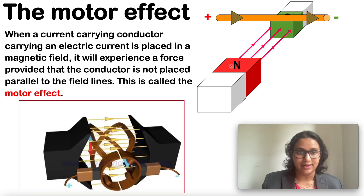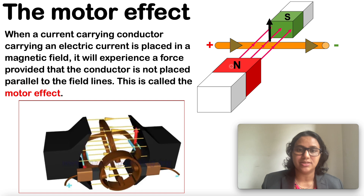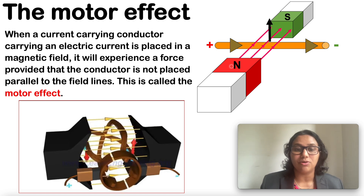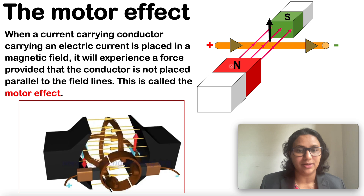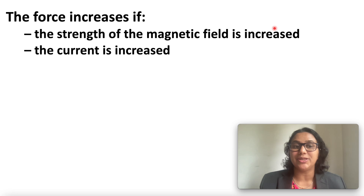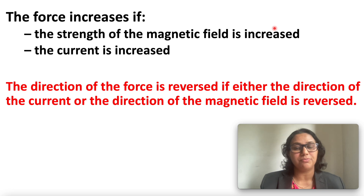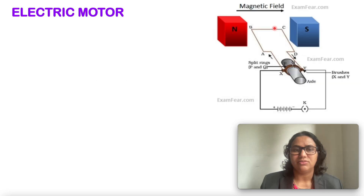When a current-carrying conductor is placed in a magnetic field, it will experience a force, provided that the conductor is not placed parallel to the field lines. This is called the motor effect. The force increases if the strength of the magnetic field is increased or the current is increased. The direction of the force is reversed if either the direction of current or the direction of magnetic field is reversed.